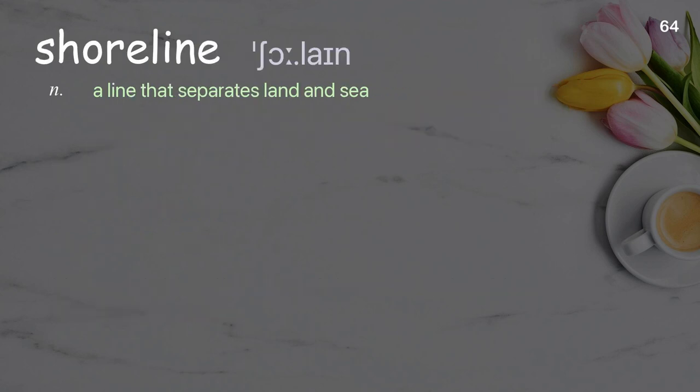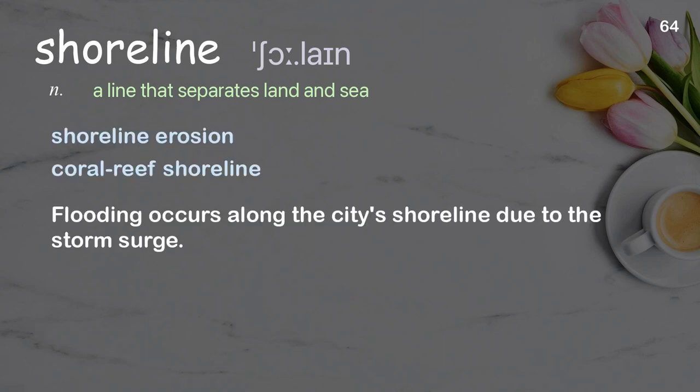Shoreline: a line that separates land and sea. Examples: shoreline erosion, coral reef shoreline. Flooding occurs along the city's shoreline due to the storm surge.